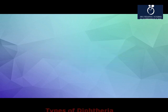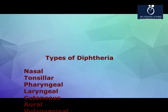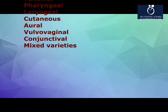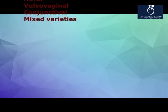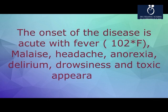Types of diphtheria: nasal, tonsillar, pharyngeal or faucial, cutaneous, oral, vulvovaginal, congenital, and mixed varieties. The onset of the disease is acute with fever, malaise, headache, anorexia, delirium, drowsiness, and toxic appearance.